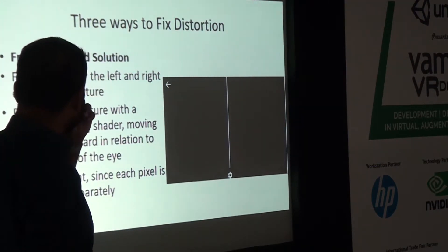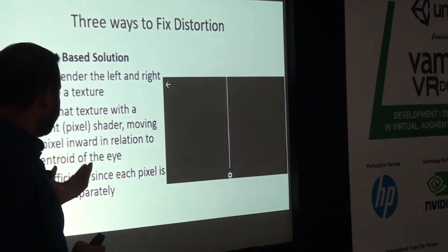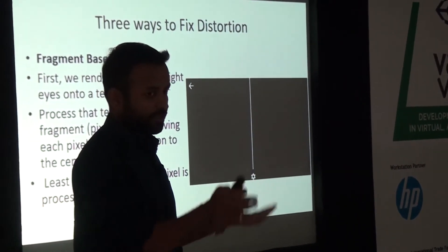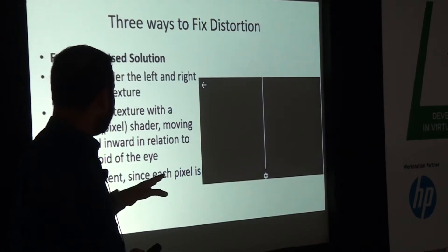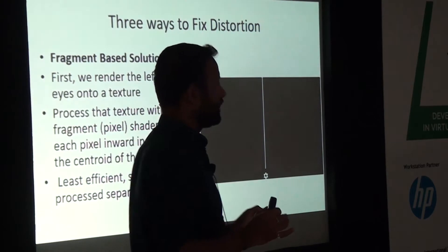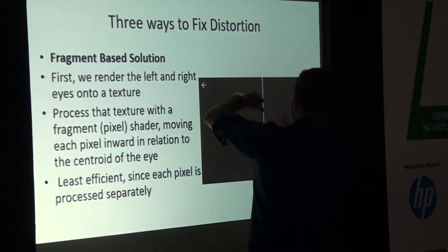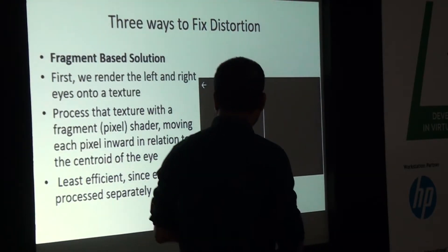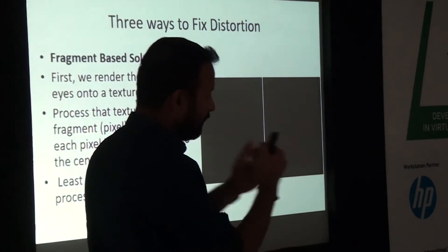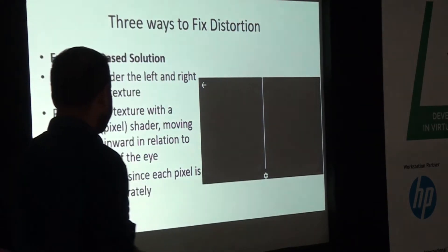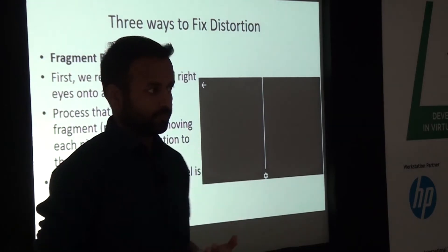In the fragment-based solution, we render the left and right eye images onto a texture and process that texture with a fragment or pixel shader, moving each pixel inward in relation to the centroid of the image. This essentially applies barrel distortion onto the original image. When you see the result through the lens, you see a flat image. However, it is the least efficient method because each pixel is processed separately in the pixel shader, which is a very expensive operation, primarily suitable for PC-based VR where power is less of a concern.